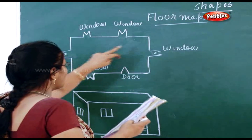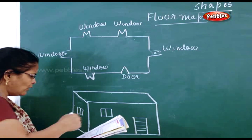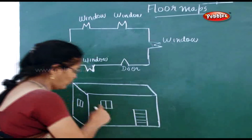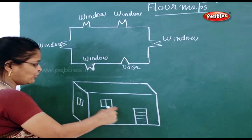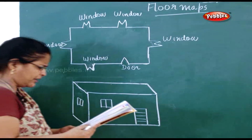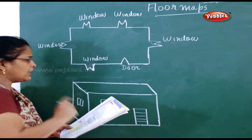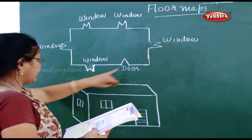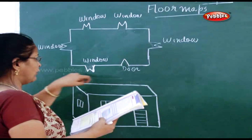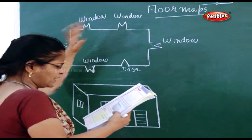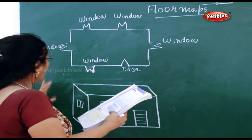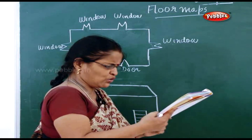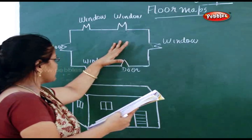This house has got one window and one door in the front, and two windows at the back. One window in the front and one door in the front, two windows at the back, and one window on the left and the other window on the right side of the house. This is the floor map.